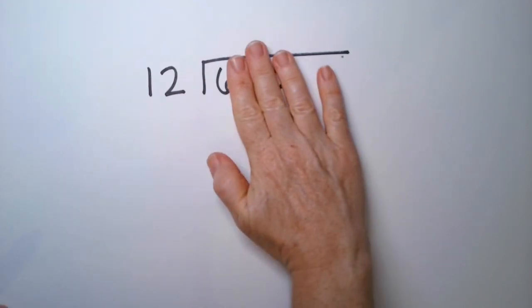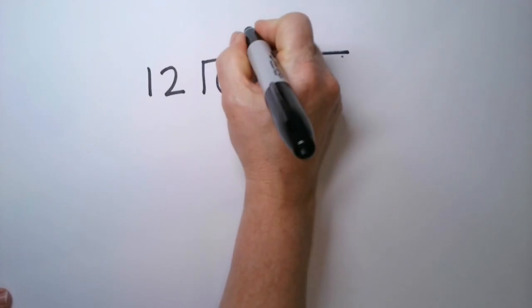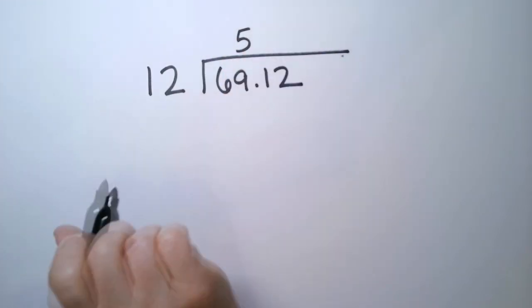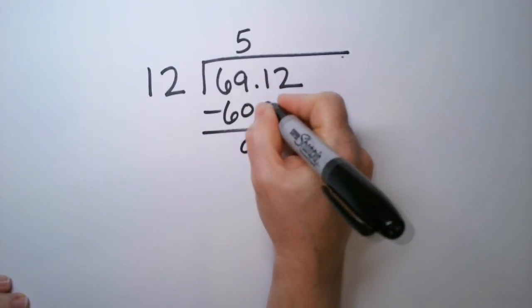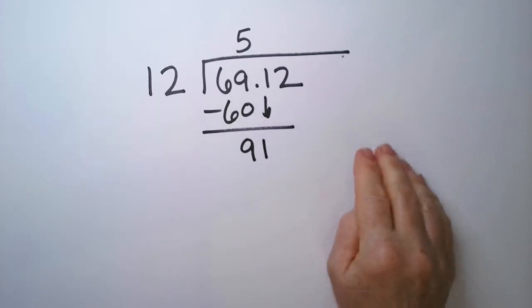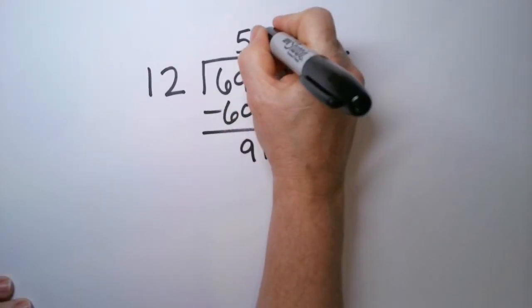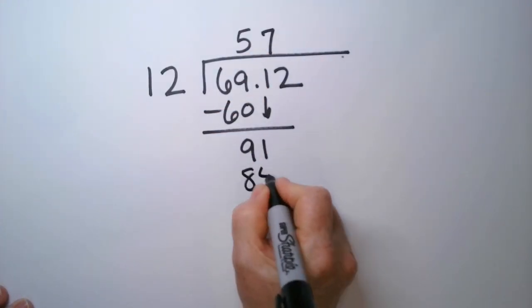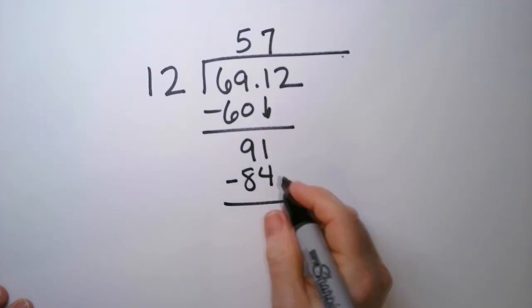So 12 doesn't go into 6, but it does go into 69. It goes in 5 times. 5 times 12, keep everything in the row, is 60. And we have a 9. We're going to drop that 1 down, so now we have a 91.